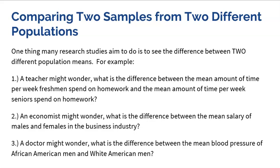We are measuring the same thing from those two different populations. We're never going to look at a problem where we're comparing the mean shoe size of men versus the mean salary of women — that would be a meaningless comparison. So we look at two different populations — men versus women, seniors versus freshmen, white American men versus African American men — but we always measure the same variable, whether it be blood pressure, salary, or time spent on homework per week.